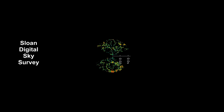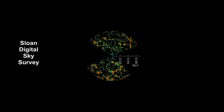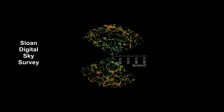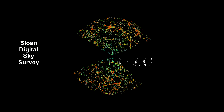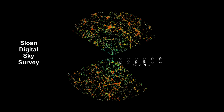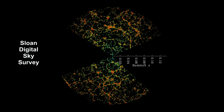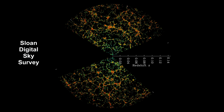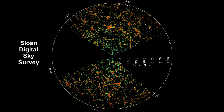Between 2000 and 2008, the Sloan Digital Sky Survey conducted one of the most ambitious and influential surveys in the history of cosmology. Over eight years of operations, it obtained deep, multicolor images covering more than a quarter of the sky and created a three-dimensional map containing more than one million galaxies. These are the color-enhanced slices through the survey's three-dimensional map of the distribution of galaxies.